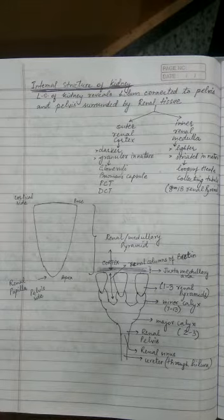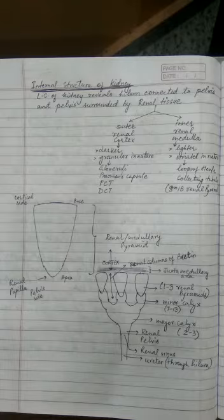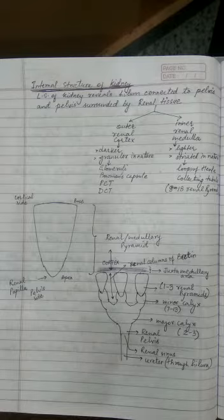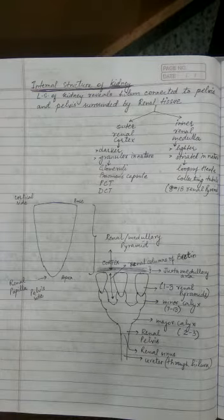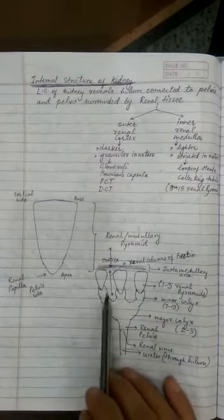The inner portion is lighter in color, appears striated, and is rich in the loops of Henle and collecting tubules, called the medulla. The medulla is positioned in the form of pyramids and there are around 8 to 18 pyramids in each kidney.